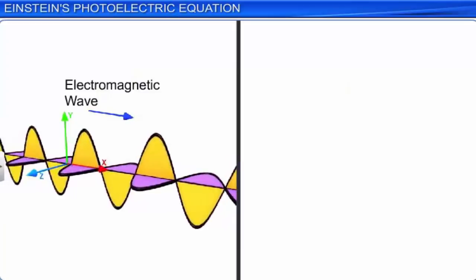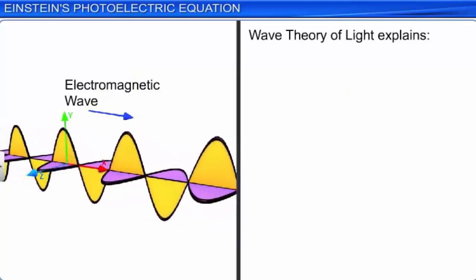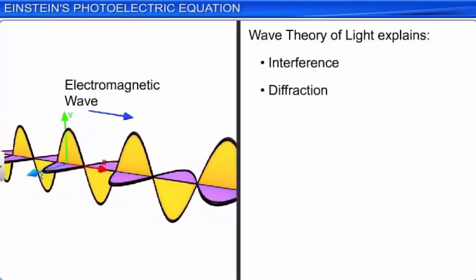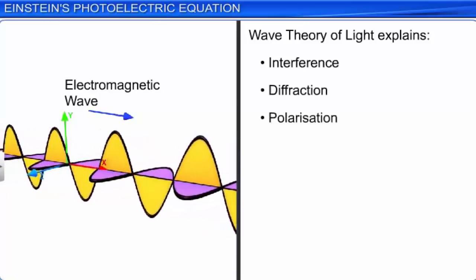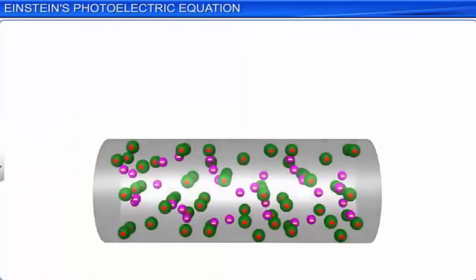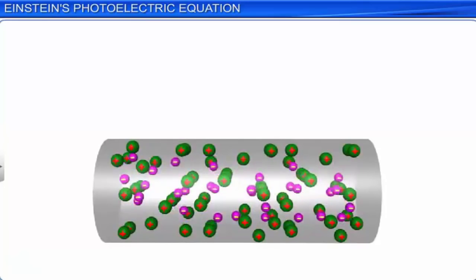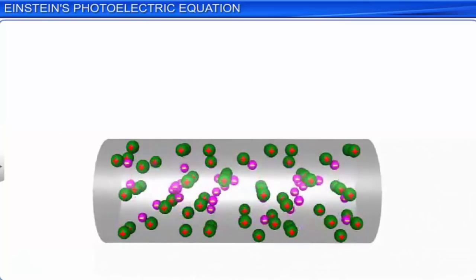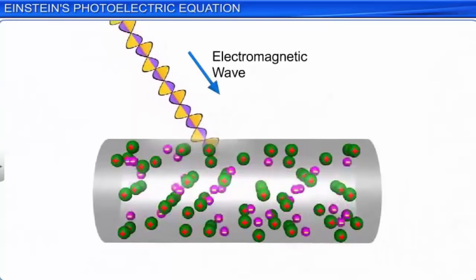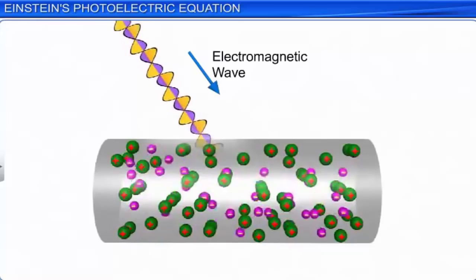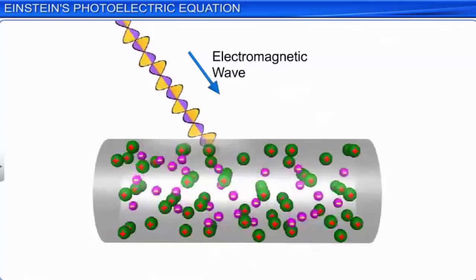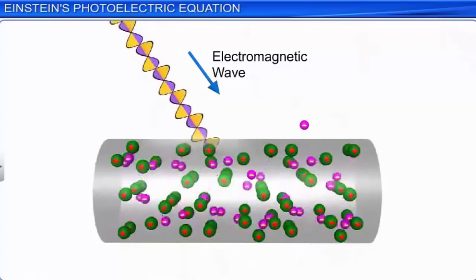We have already learnt that the wave theory of light satisfactorily explains the phenomena of interference, diffraction, and polarization. Now, let us apply the wave theory of light to the photoelectric effect. According to the wave theory, when electromagnetic waves are incident on a metal surface, the electrons of the metal surface absorb the energy continuously, and photoelectrons are ejected from the metal surface.